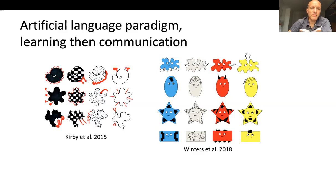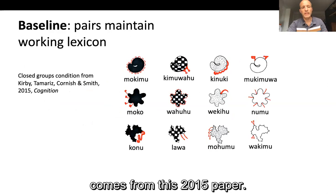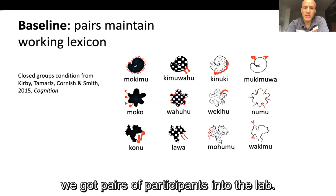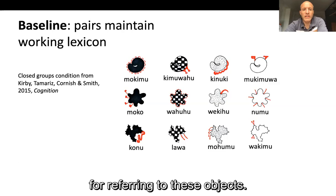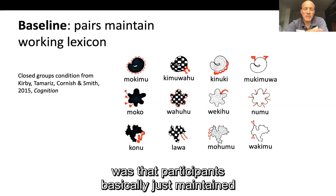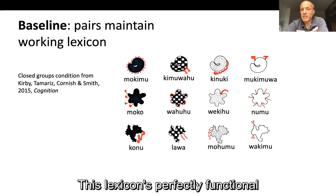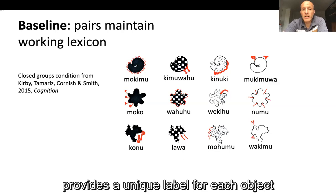The baseline result for this kind of experiment comes from a 2015 paper. In that experiment, we got pairs of participants into the lab and trained them on 12 randomly generated labels for each of 12 objects — an idiosyncratic lexicon for referring to these objects. What we found was that participants basically just maintained that lexicon we provided them with. This lexicon is perfectly functional for the communicative task they face, provides a unique label for each object, and both participants had been trained on it quite extensively, so they just preserved it.